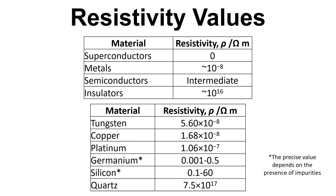Returning to resistivity, we can classify materials depending on their resistivity. Superconductors have zero resistivity, so there's no restriction to the flow of current. Metals have a very low resistivity, around 10 to the power of 16 ohm meters, and semiconductors are somewhere in between, normally around 100 ohms.